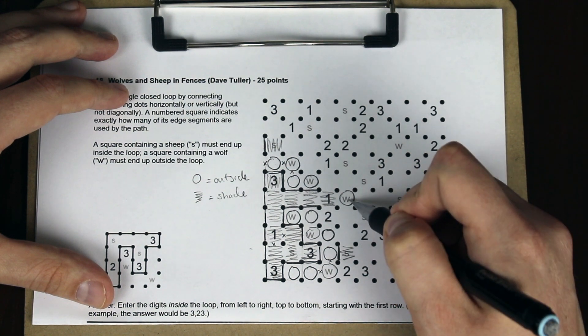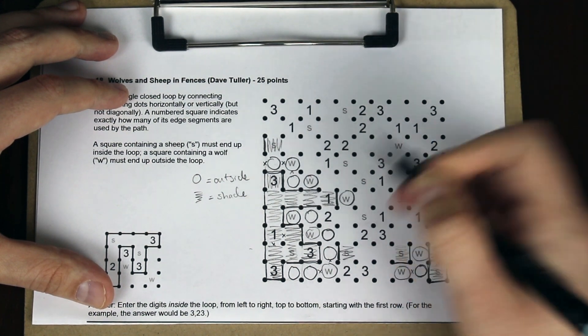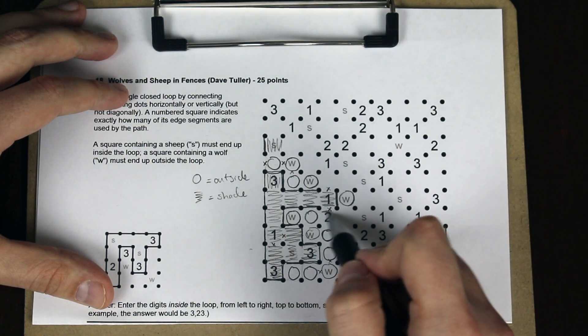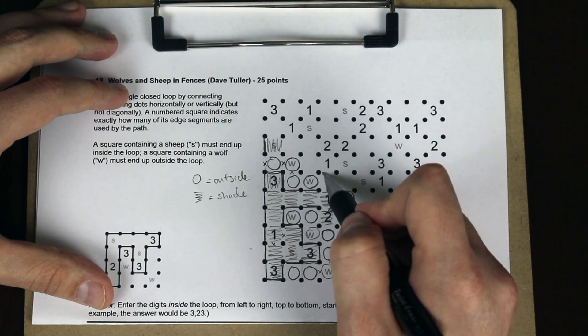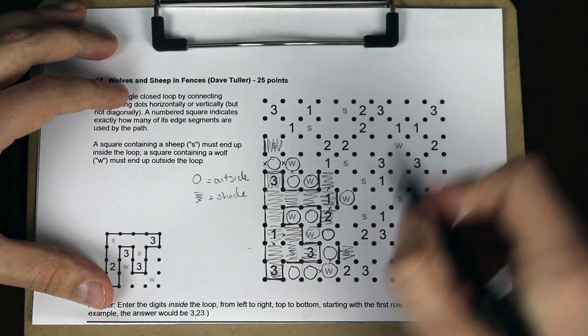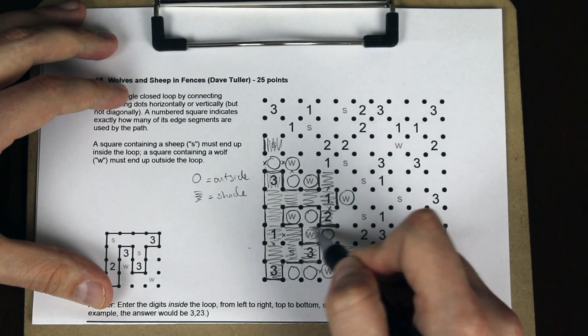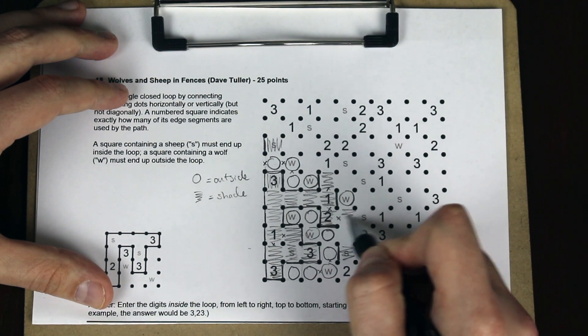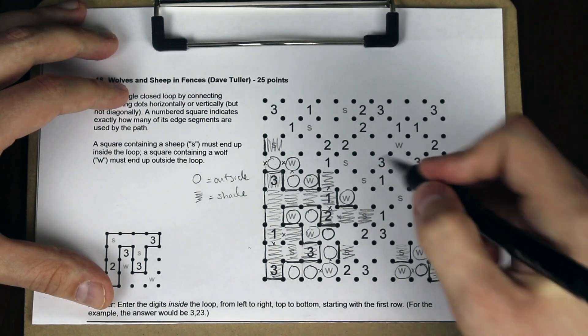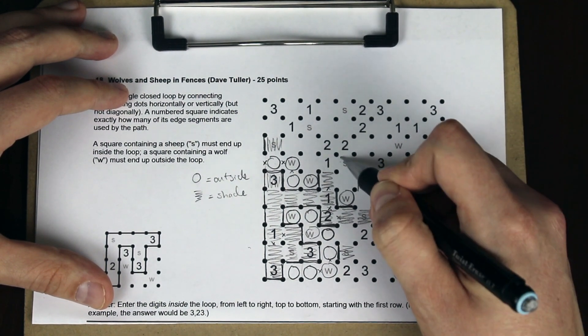And this is outside because it's a wolf. Which means we need to have a line here. That means we can't have lines here, so this is inside, and that's inside. That completes the two. So this must be inside the loop. These are inside as well.